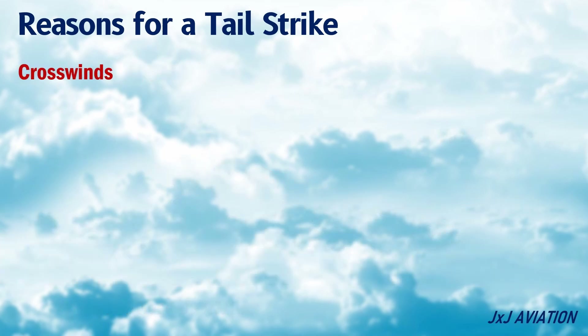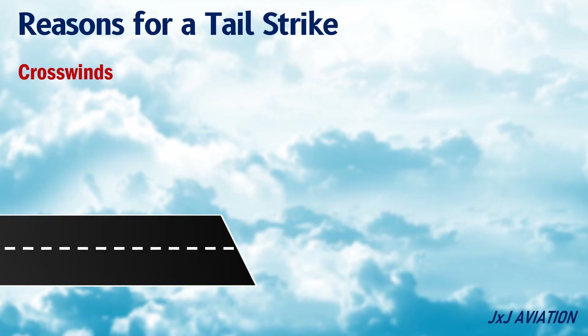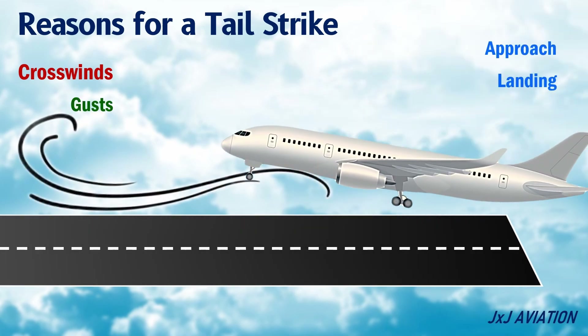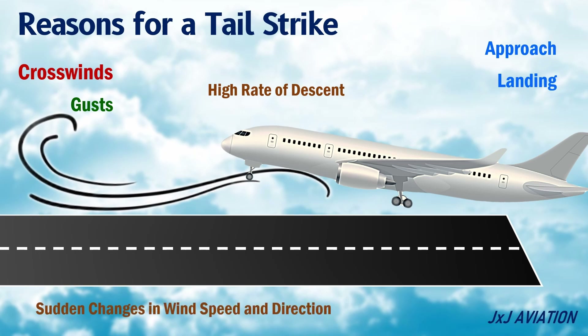Crosswinds: during approach, or just before landing, crosswinds or gusts will increase the probability of a tail strike. This is because of a combination of different effects such as high rate of descent, sudden changes in wind speed and direction, turbulence, and deflection of flight controls.